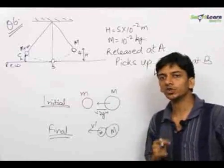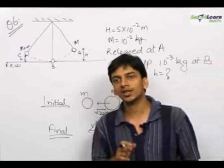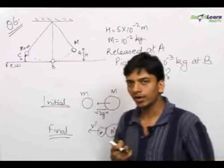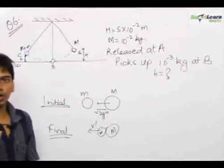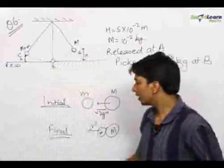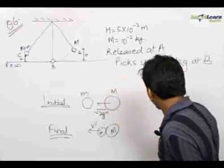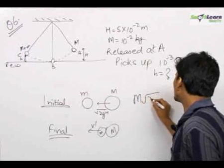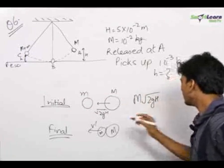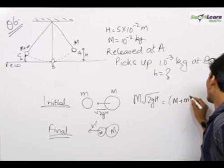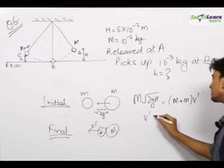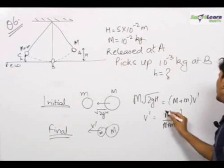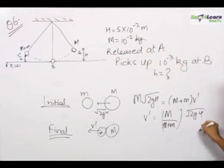Strictly speaking, momentum conservation is only applied on a system when the external forces on the system are 0. In this case, though the external forces were not 0, they were so small because conservative forces are small and multiplied by a small time interval, making their effect negligible. Therefore, we neglect the conservative forces and apply momentum conservation to get: m times root over 2gh equals m plus m times v dash.